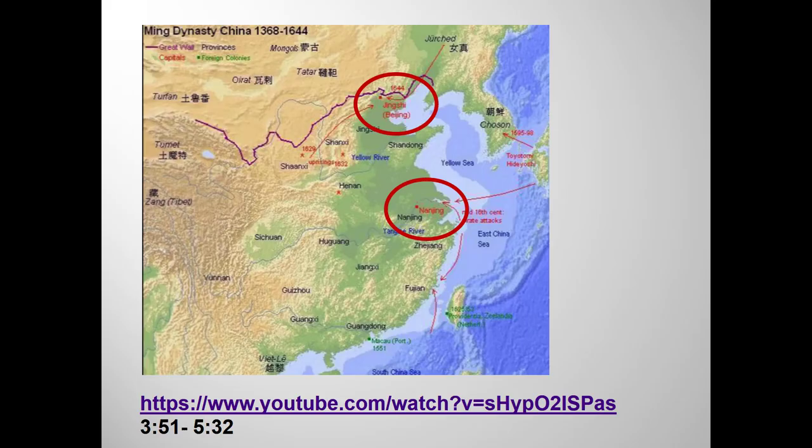The Ming dynasty initially established its capital in southern China, in Nanjing, but the third Ming emperor moved the capital back to Beijing. You need a break from the disembodied voice, so let's watch a short clip from a good National Geographic video about the Forbidden City.